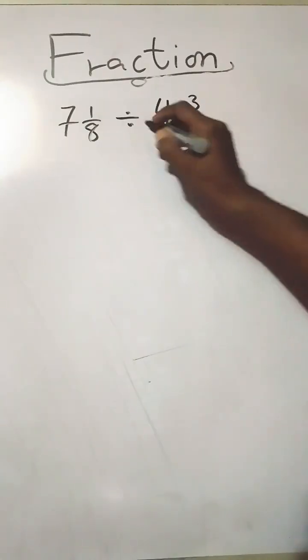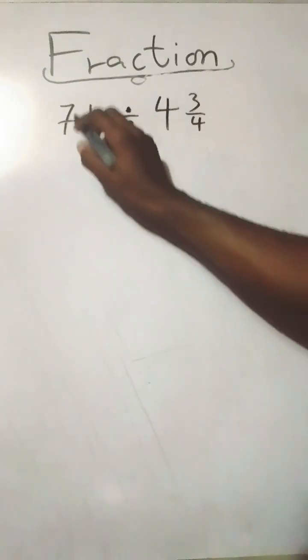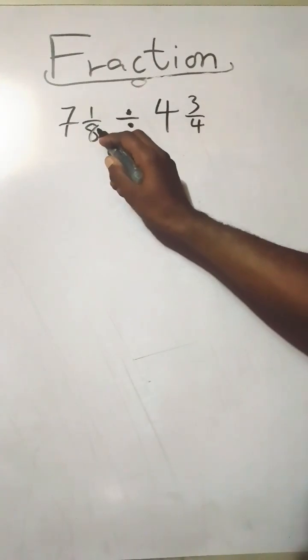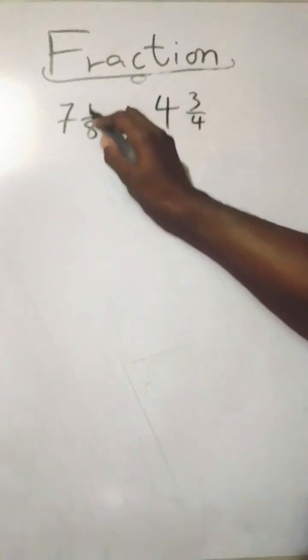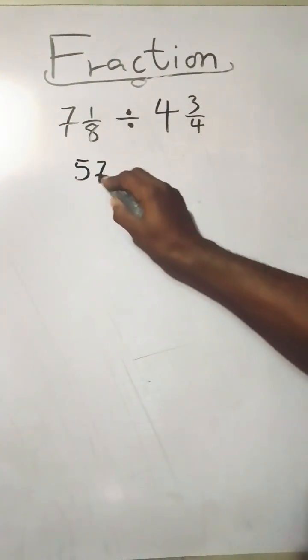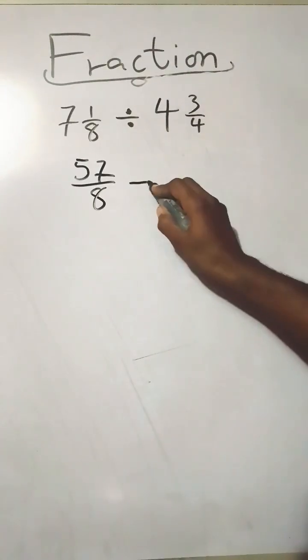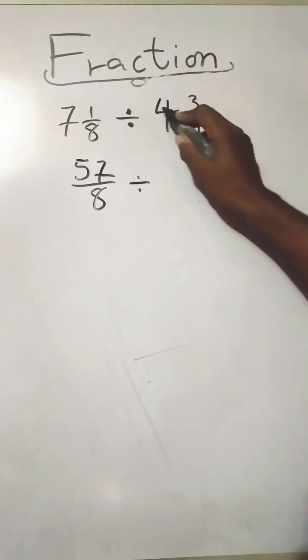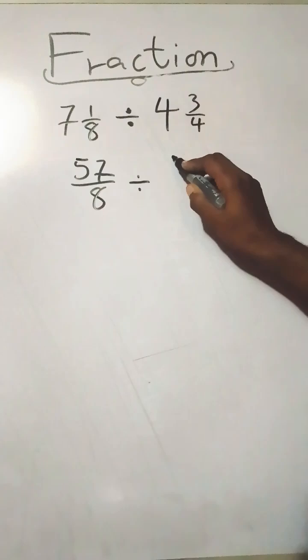Alright, now we have mixed numbers and need to convert them to improper fractions first. 8 times 7 is 56, plus 1 gives you 57 over 8. That's divided by 4 times 4 which is 16, 16 plus 3 gives you 19 over 4.